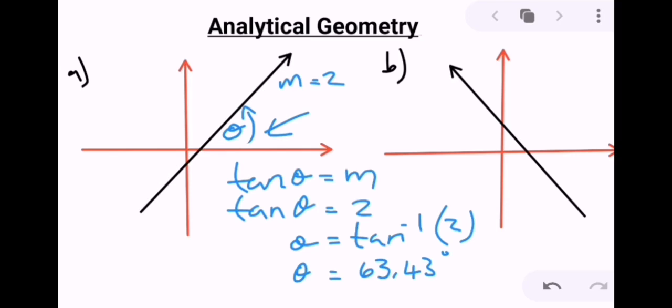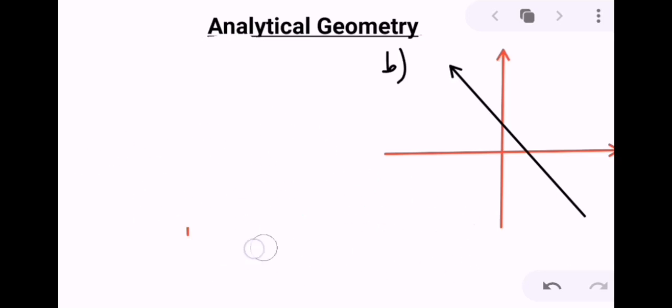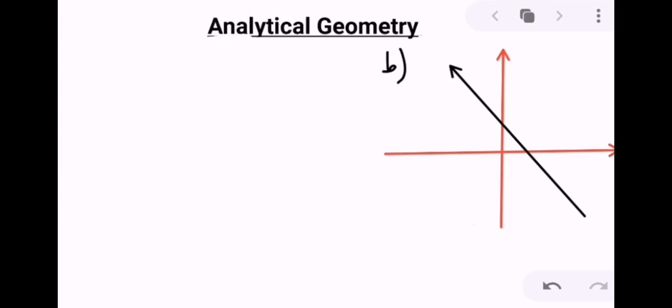Okay, now let's reverse this question. Let's pretend that we had our angle of inclination and we need to work out our gradient. For this next example, I'm going to say that we don't know what m is, but we do know that this angle of inclination is 135 degrees.